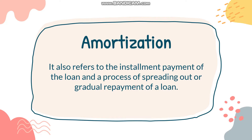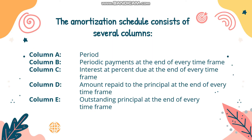For example, if you have to pay a particular amount for 25 years, we are spreading it into different payment periods with equal amounts to be paid. Now we have what we call the amortization schedule, which allows us to see how much we are going to pay for each periodic payment, how much of it will go to the interest, and how much will be repaid to the principal. To create the amortization schedule, we have to follow these steps.